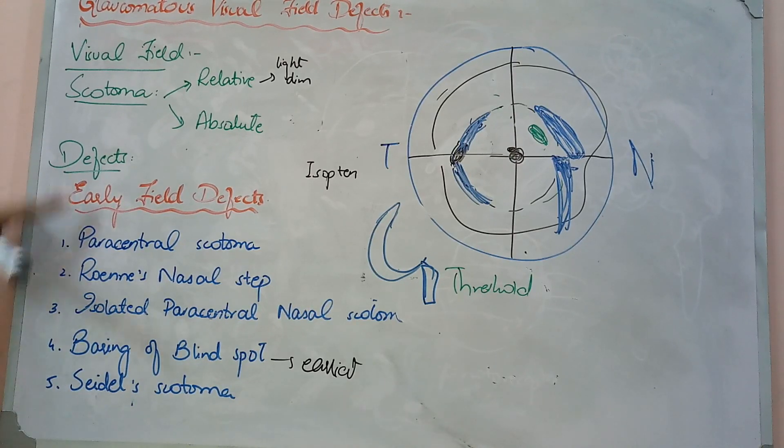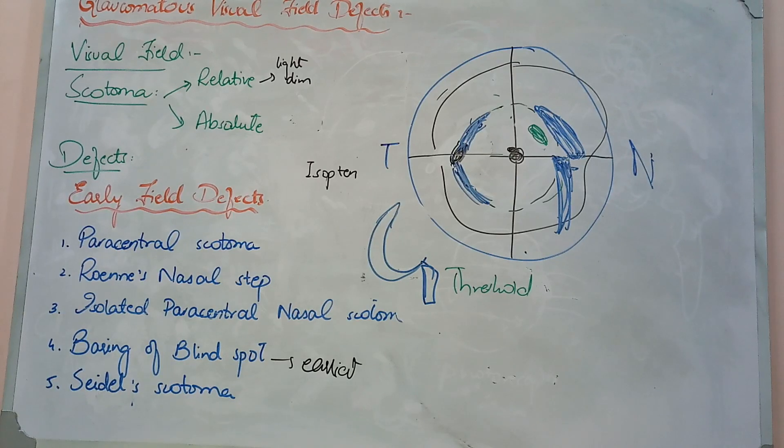Now we have covered the early visual field effects. It was very simple. Now I will tell you which are the moderate visual field effects.